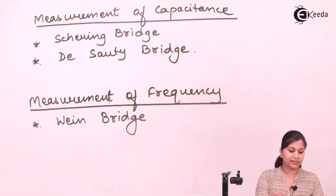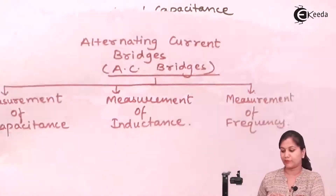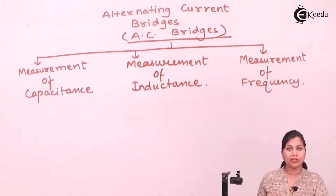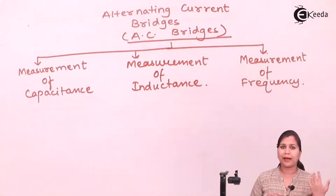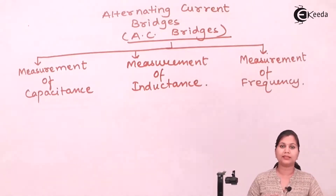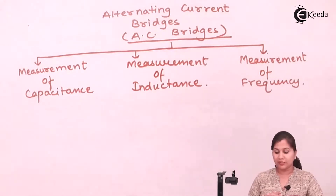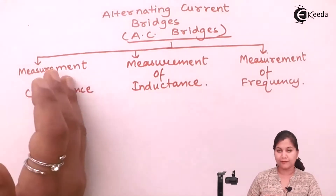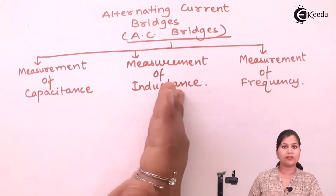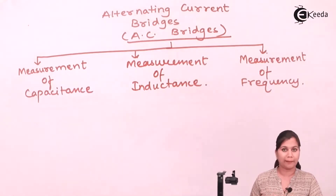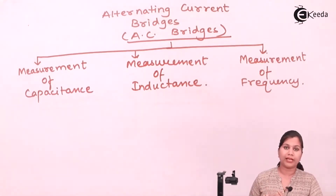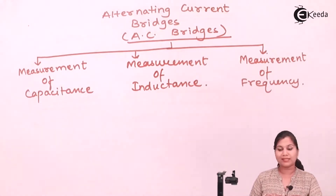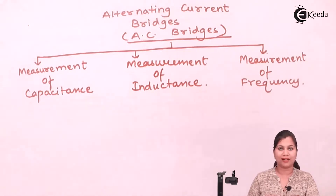So here we have seen the various types of alternating current bridges available for the measurement of various AC parameters like resistance, inductance and capacitance. Frequency can also be measured with AC bridges. For capacitance, we have two bridges — Schering and De Sauty. For inductance, we have five bridges — Maxwell inductance, Maxwell inductance capacitance, Anderson, Hayes and Owens bridge. For frequency, we have one — the Wien bridge. I hope it is now clear what the various types of alternating current bridges are. Thank you.